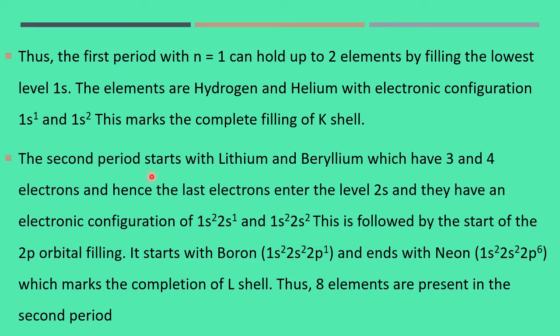The second period starts with lithium and beryllium which have 3 and 4 electrons, and hence the last electron enters the 2s with electronic configuration 1s2 2s1 and 1s2 2s2. This is followed by the start of the 2p orbital filling. It starts with boron and ends with neon 1s2 2s2 2p6. That means lithium, beryllium, boron, carbon, nitrogen, oxygen, fluorine, neon, totally 8 elements. The capacity of the L shell is 8. Second period can take 8 electrons.